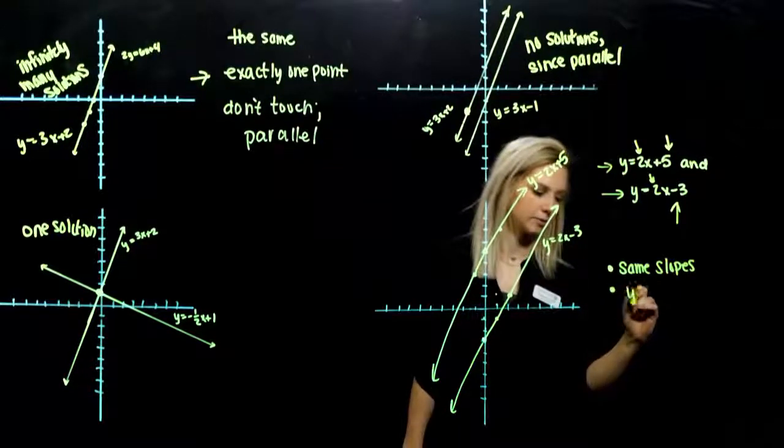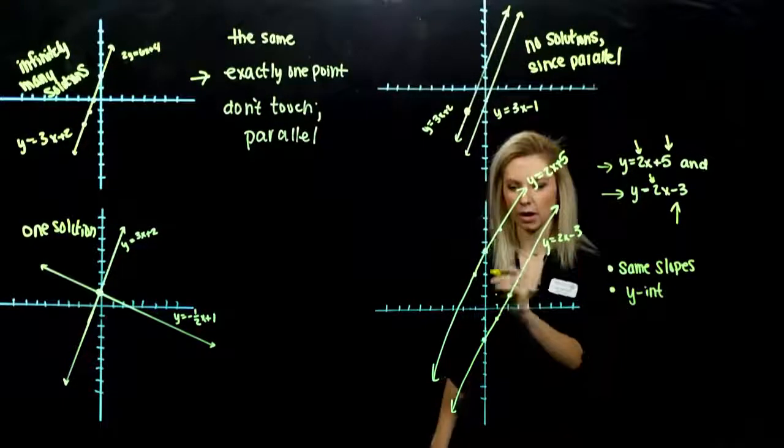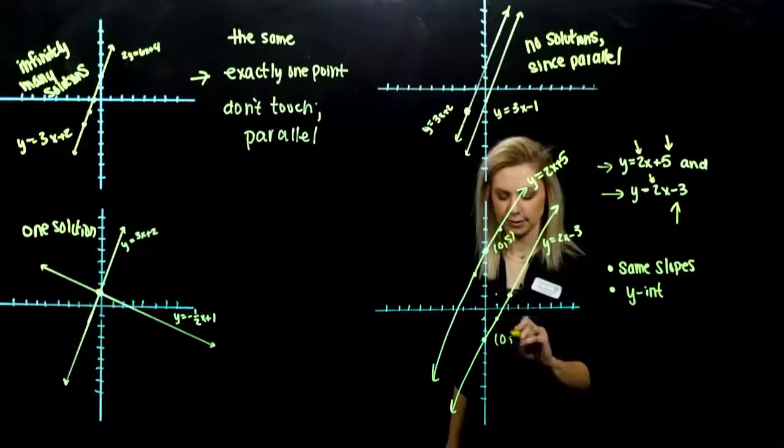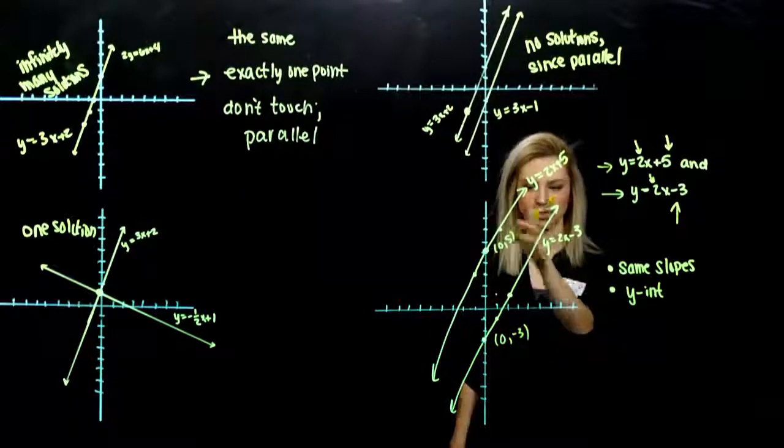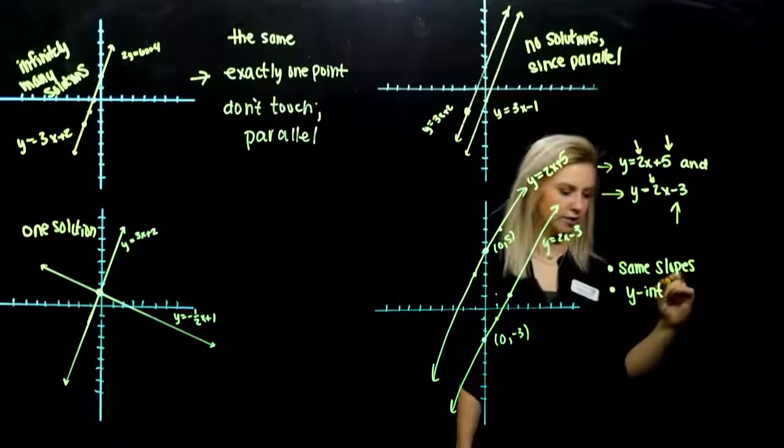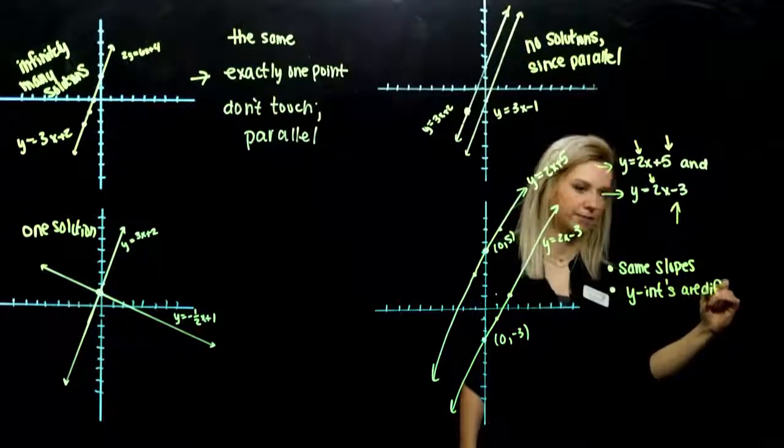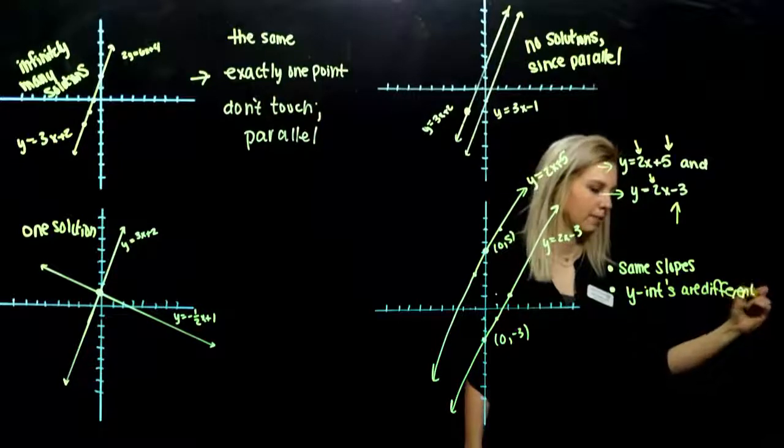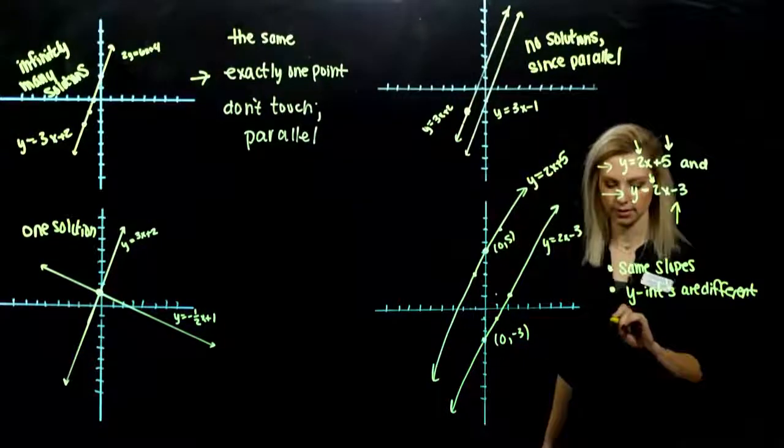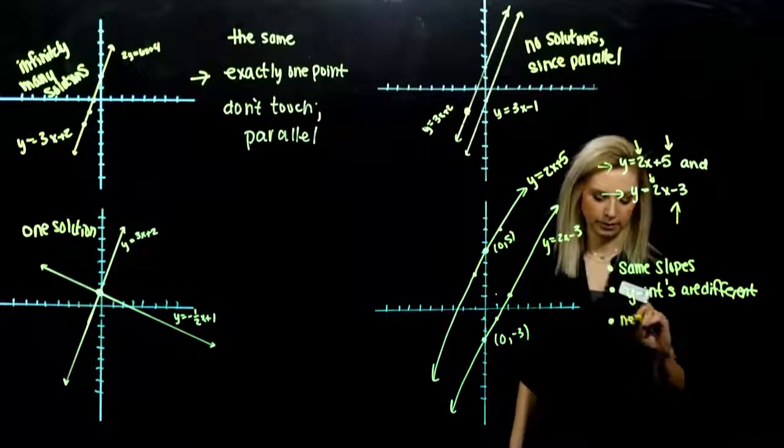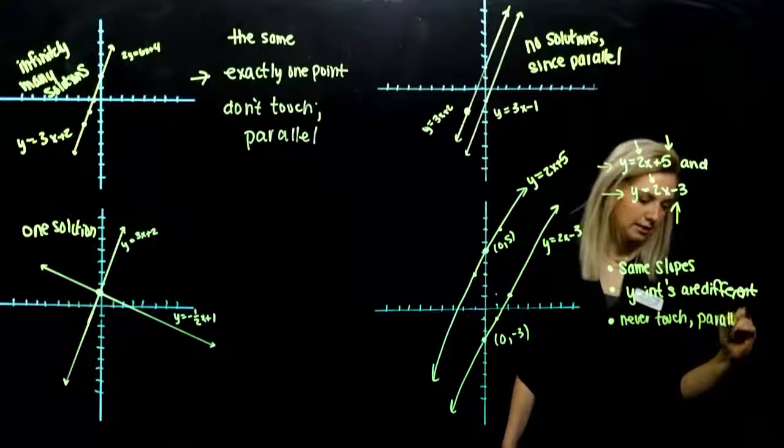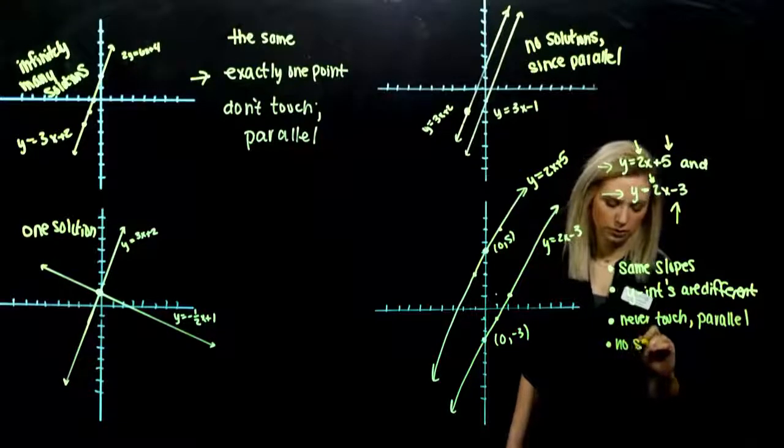But what about their y-intercepts? I've got one up here at 0, 5. One down here at 0, minus 3. So they're changing at the same rates, but they're crossing the y-axis in different spots. So the y-intercepts are different. And again, we don't have any solutions. They're never touching. They're parallel.